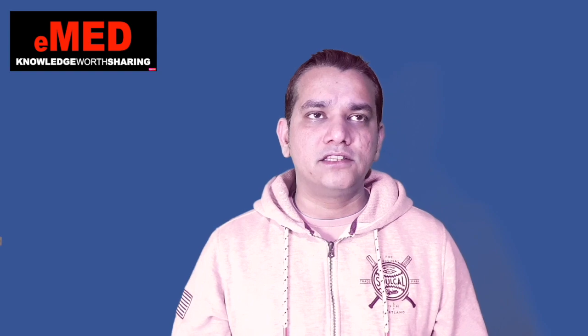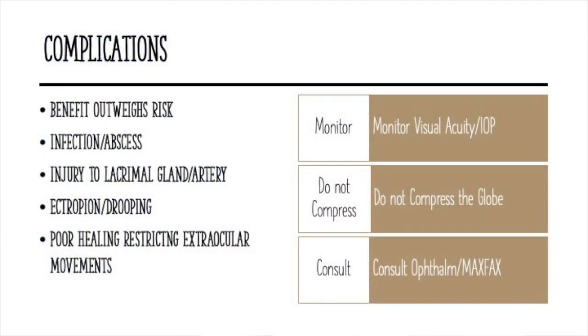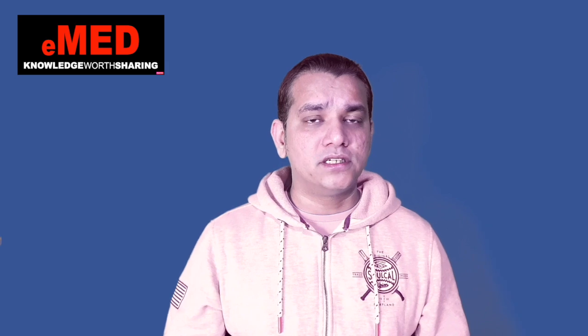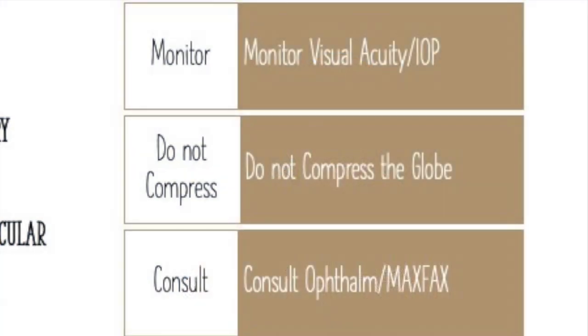The complications of lateral canthotomy and inferior cantholysis include: infection or abscess formation; if you go too close to the upper eyelid, you may injure the lacrimal gland and lacrimal artery, causing further bleeding; and poor wound healing leading to restricted eye movements. In general, the benefits of this procedure outweigh the risks. After the procedure, monitor intraocular pressure and visual acuity, do not compress the globe, and consult maxillofacial or ophthalmic surgeons.